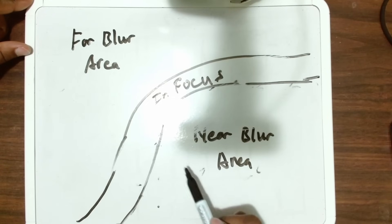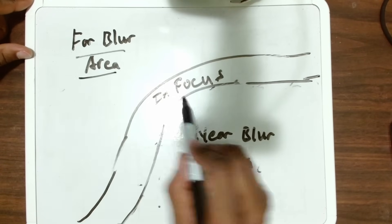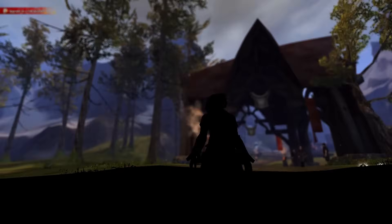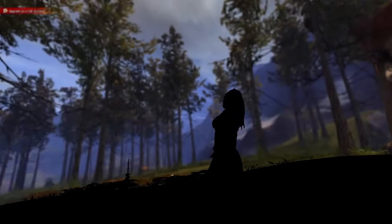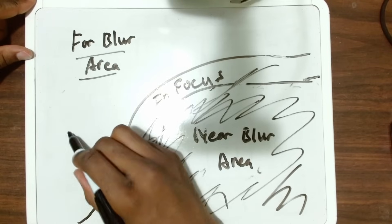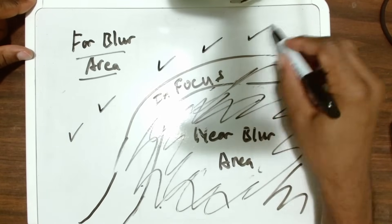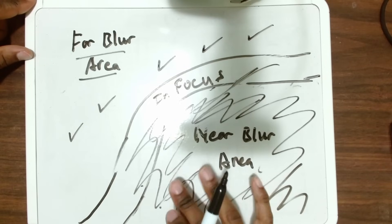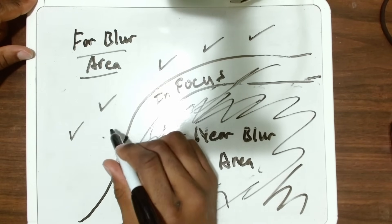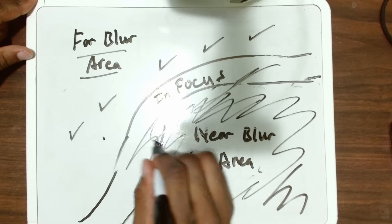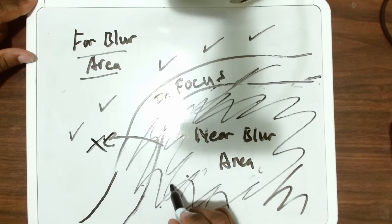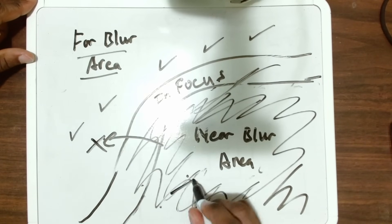For things that are far, you first mask anything that's not far, giving you an image with far things and just black elsewhere. Then you blur just the things that are far. On a GPU, there's logic involved because you don't want pixels that are far to blur things that are near into themselves, and you don't want pixels that are near — which will be black — to blur at all.